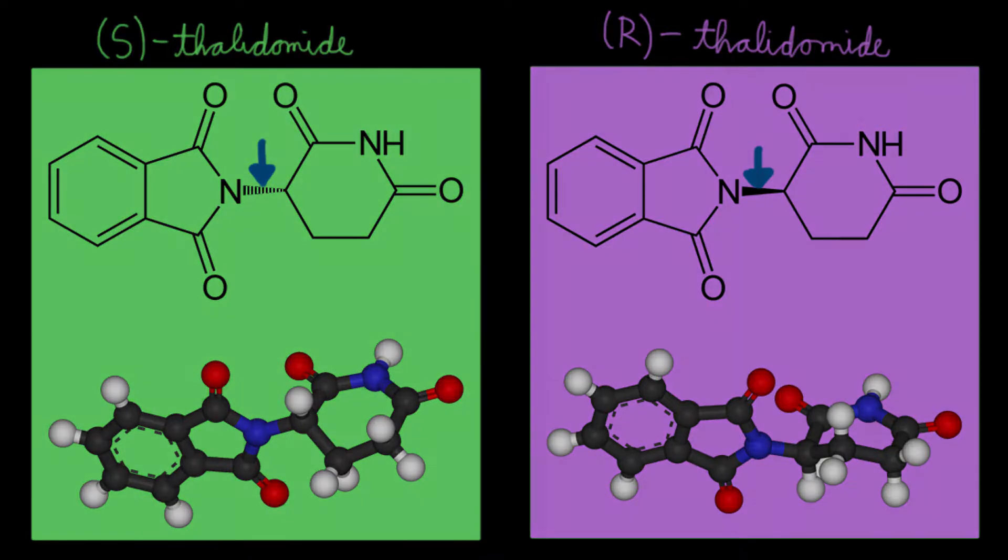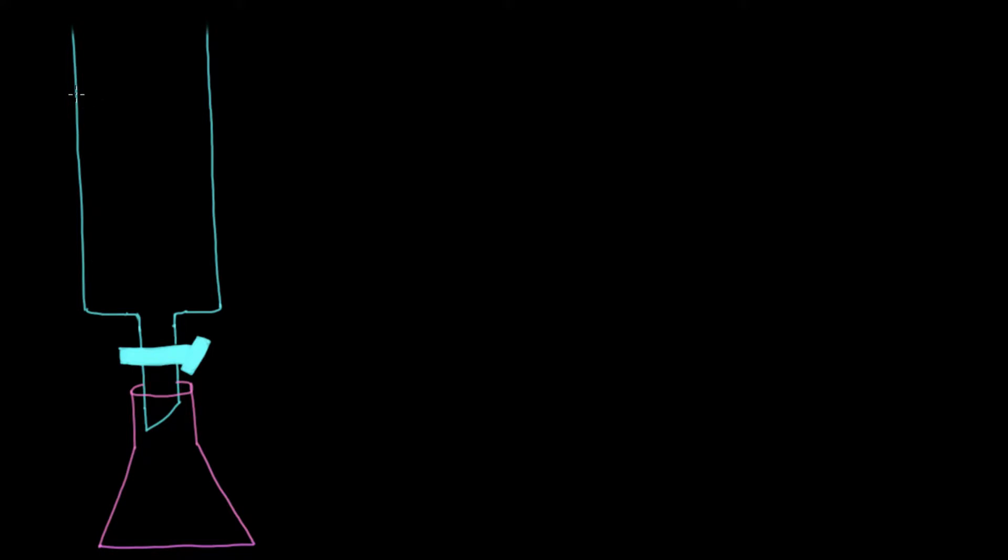So how would we go about separating these two? One technique that you could use is chiral column chromatography. You would need a stationary phase that is chiral, meaning something that will only bind either to the R conformation or the S conformation of your desired enantiomer.